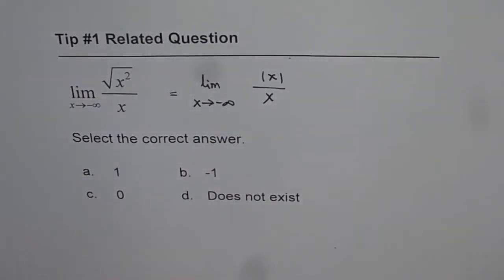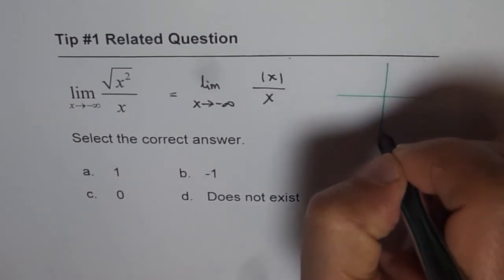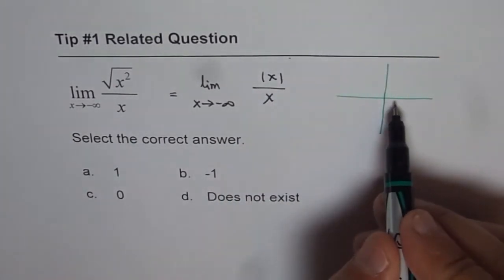Now let's try to sketch this function and find the limit at minus infinity. So as you know, absolute x is positive x when x is greater than 0, right.